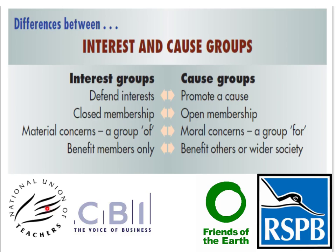Interest groups like the NUT have a closed membership — to join the National Union of Teachers you obviously need to be in that profession. A further common feature of interest groups is that members are motivated by material self-interest; people join a trade union to campaign for things like better pay and better conditions at work. In contrast, cause groups such as Friends of the Earth and the RSPB exist not to defend the interests of their members but to promote a particular cause, with membership open to anybody who has a concern for that issue, and people joining out of moral concern rather than self-interest.